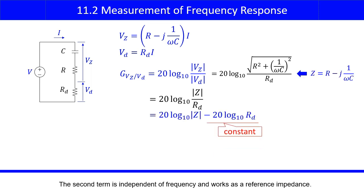The second term is independent of frequency and works as a reference impedance. This is the magnitude plot GZ of the RC series circuit.